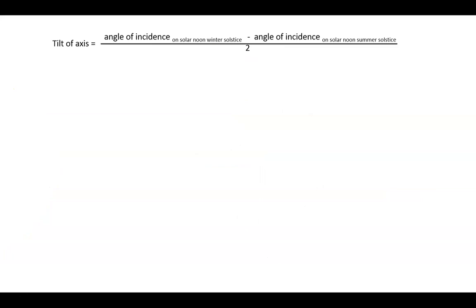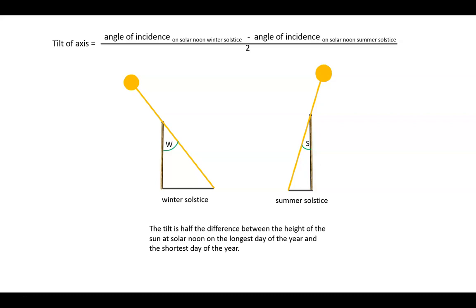Looking at it in visual terms, here is the measurement at the winter solstice, and again at the summer solstice. And finally, here is a neat word version of tilt. It is half the difference between the height of the sun at solar noon on the longest day of the year and the shortest day of the year. This concludes the video on the tilt of the Earth.